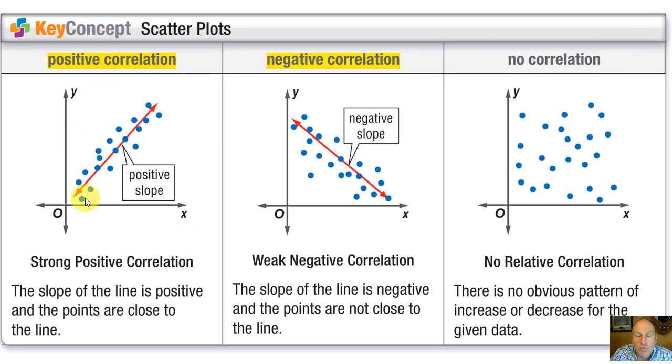We're looking here at three different scatter plots that represent a relationship between two variables, and the blue dots are the points of our data. The closer those points are clustered around the red line of best fit or line of fit, the stronger the correlation is. In the first example, there's a pretty strong correlation. The blue dots are relatively close to the red line.